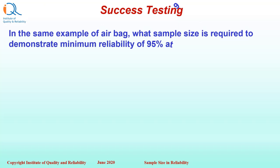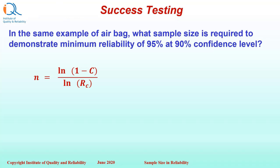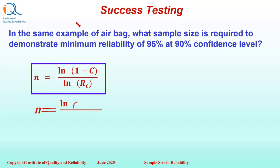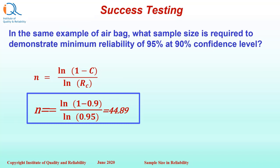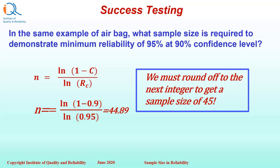In the same airbag example, what sample size is required to demonstrate minimum reliability of 95% at 90% confidence level? Using the sample size formula: n equals ln(1 minus 0.9) upon ln(0.95), which calculates to 44.89. We must round off to the next integer to get a sample size of 45.